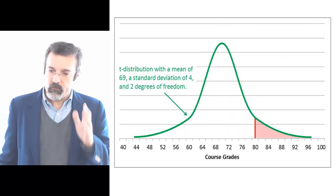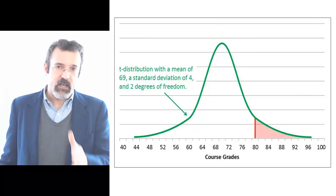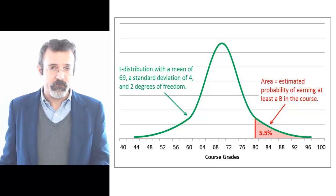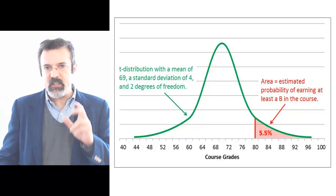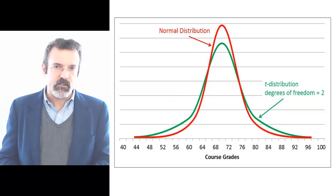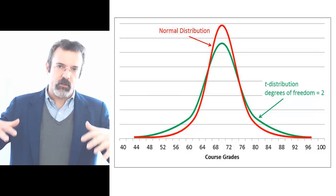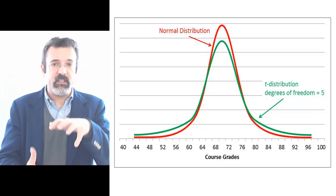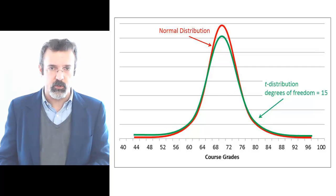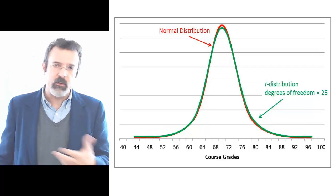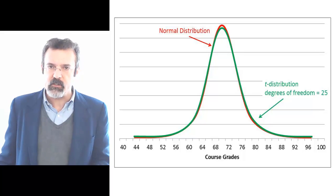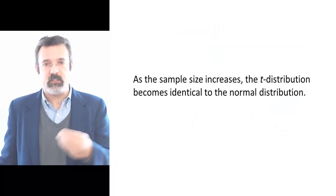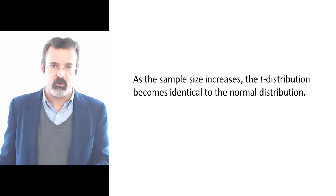The probability of earning a B or higher is the area from 80% to the right on this T distribution, or 5.5%. Notice that as the number of observations rises, the tails on the T distribution become smaller. The T distribution itself begins to look a lot like the normal distribution, so that if you have more than 30 or 40 observations, for most practical purposes there isn't a meaningful difference between the T distribution and the normal distribution.